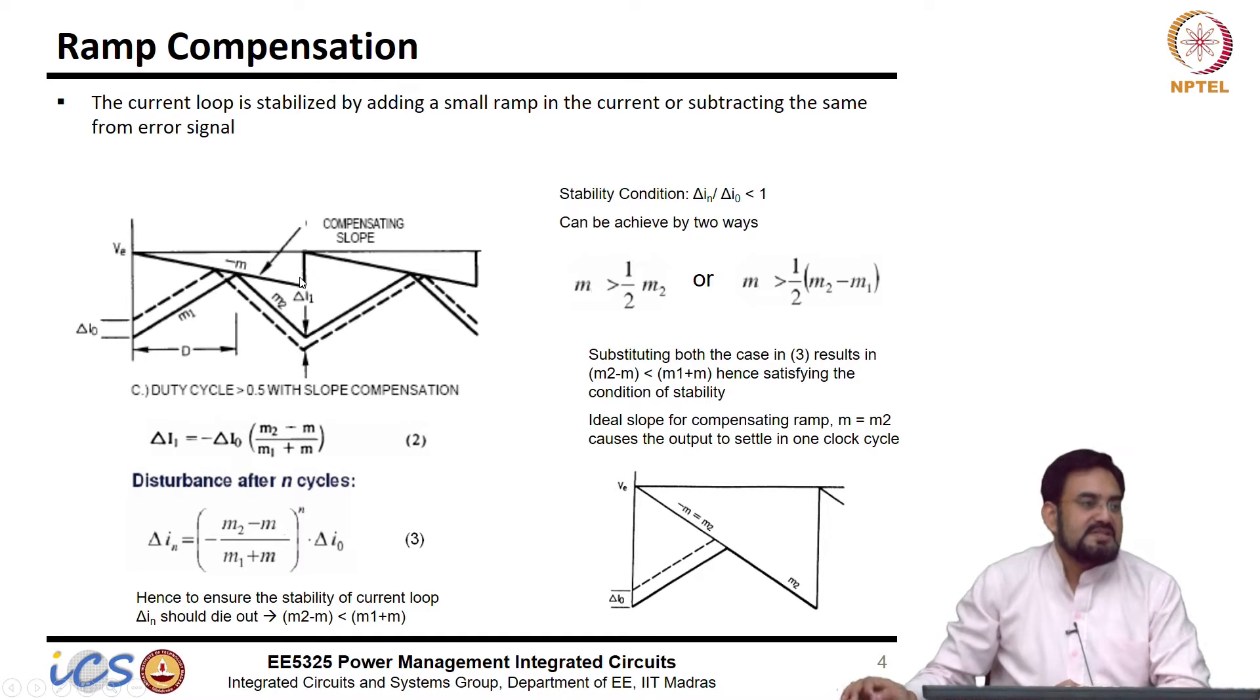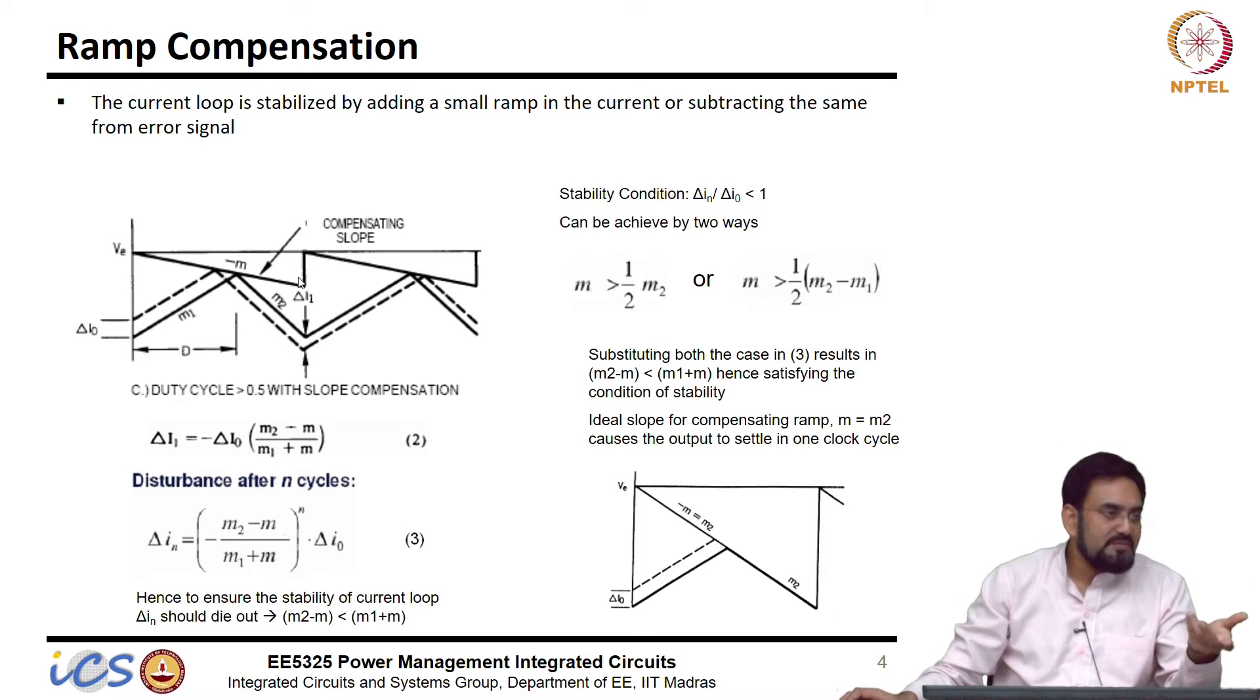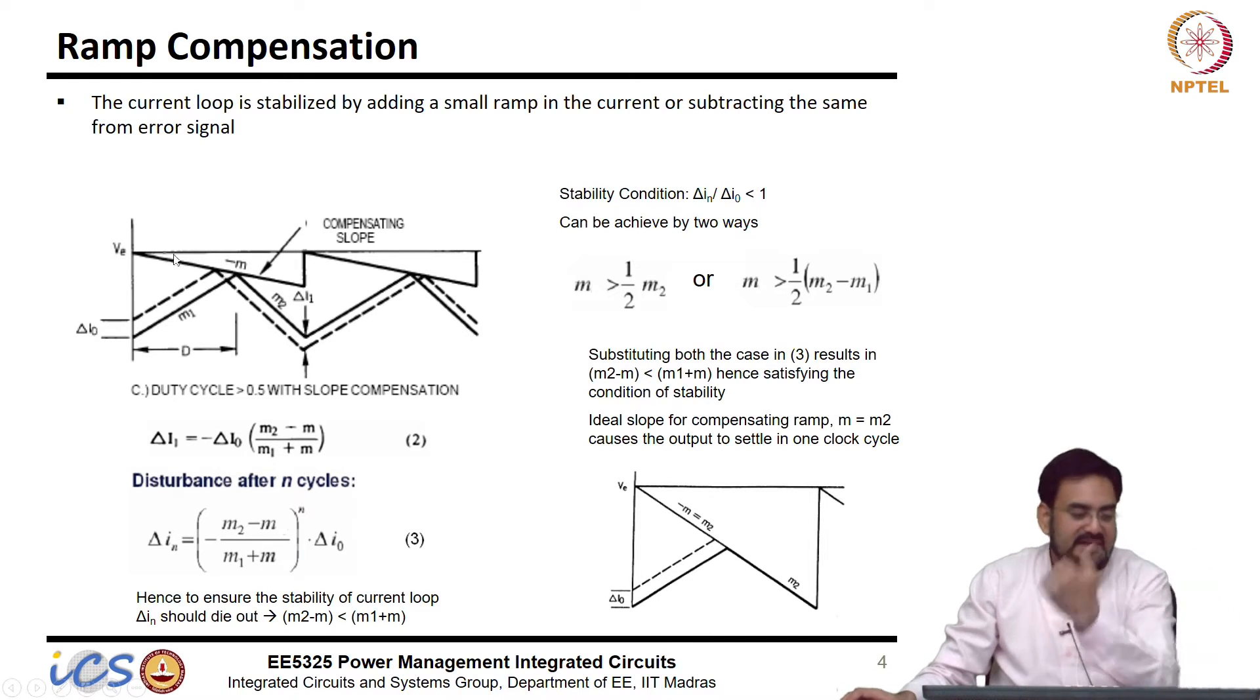So, I can basically add a negative slope which is nothing but subtracting this voltage. So, your control voltage now will become like this.